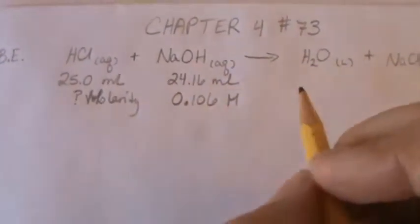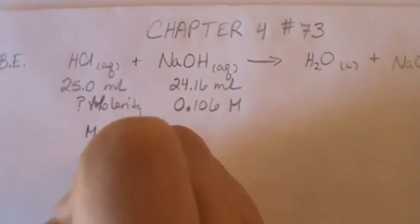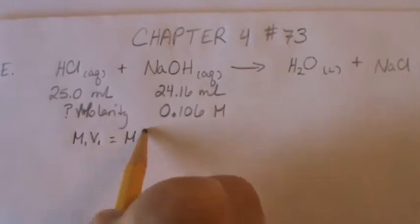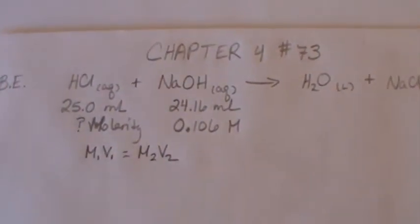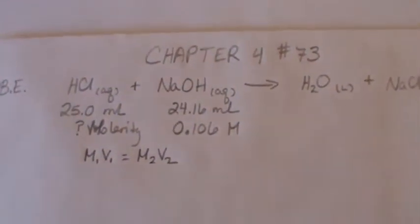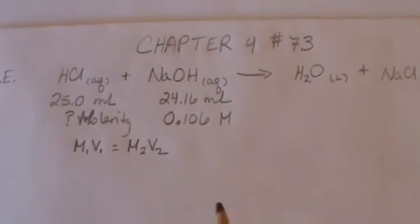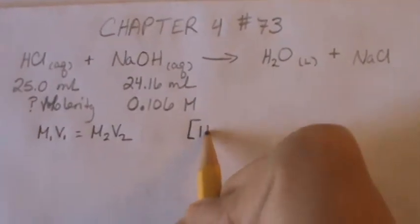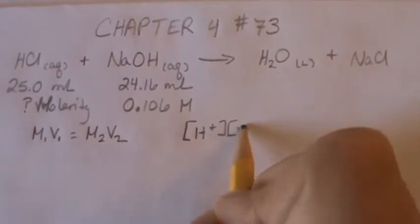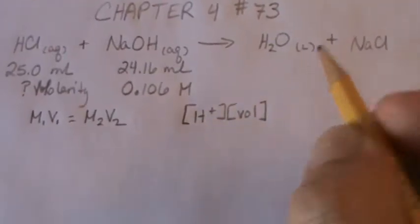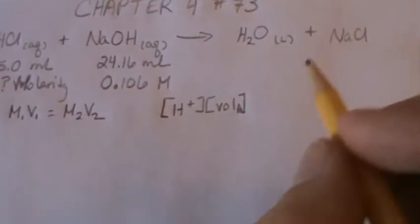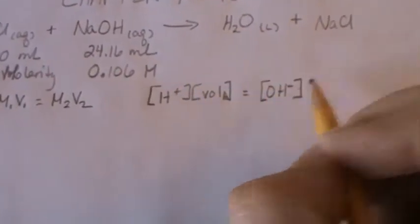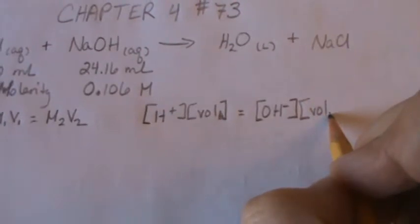So we're going to use M1V1 equal to M2V2, just like we would use for dilution, and that's for acid-base neutralization. What we're actually looking at in this case is the concentration of protons times the volume of our acid—volume A for acid—is equal to the concentration of our hydroxide ions times the volume of our base.